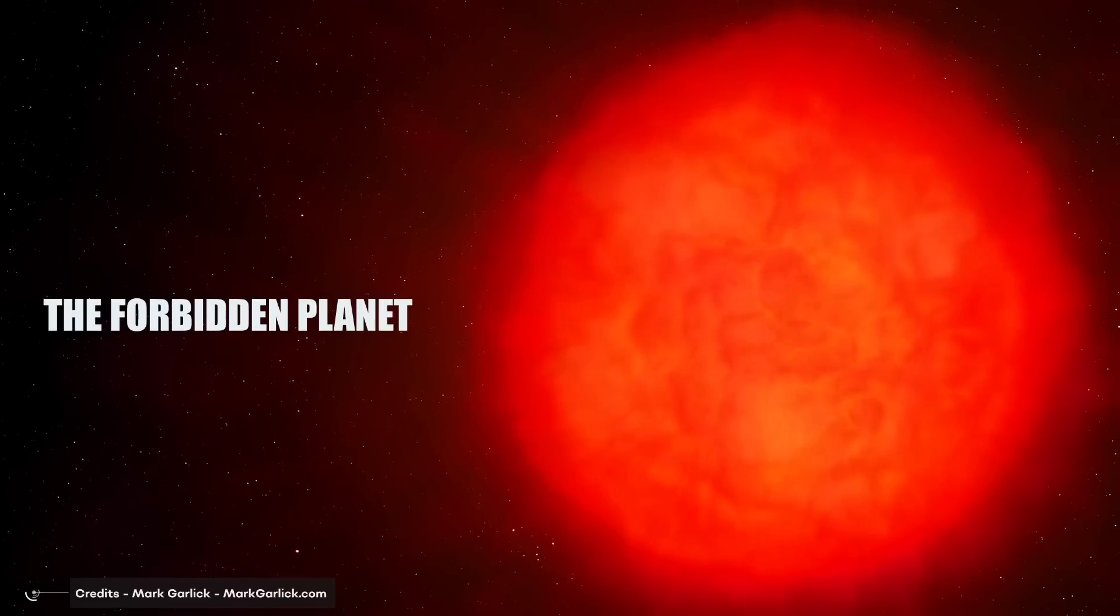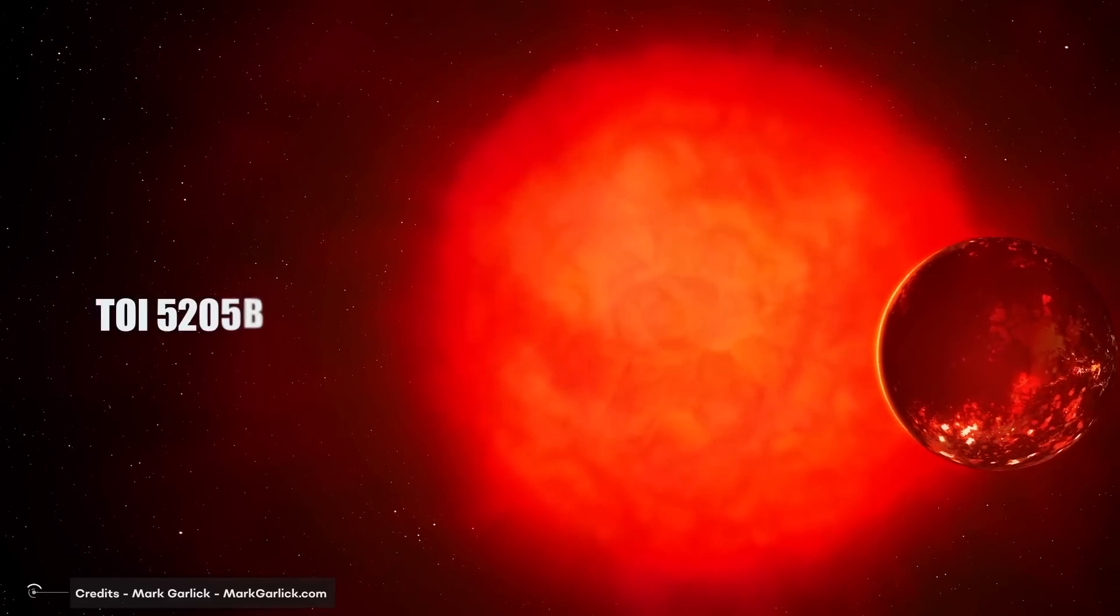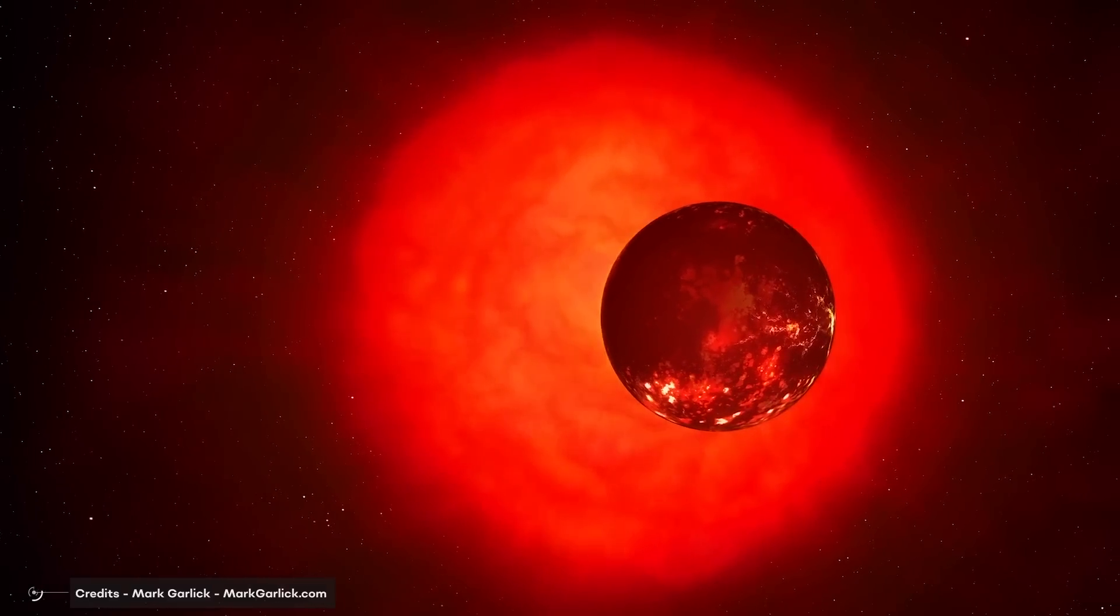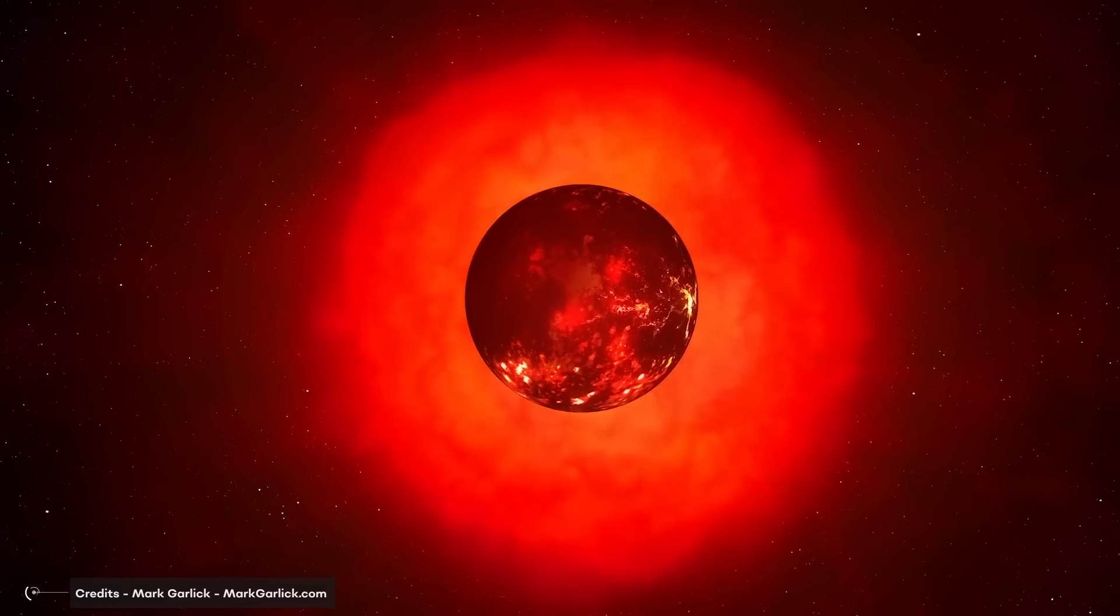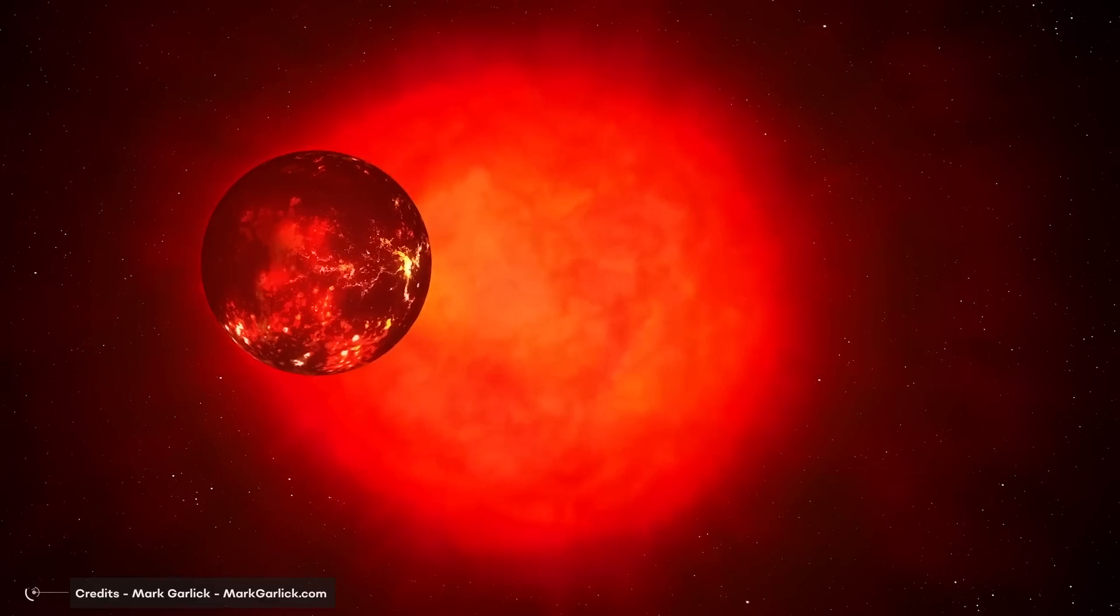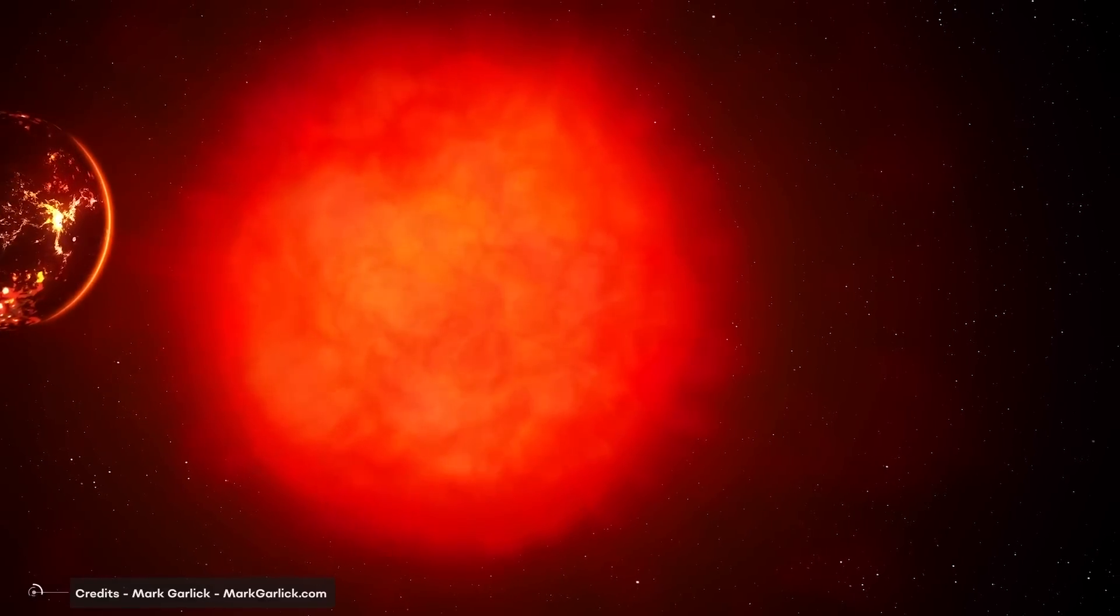Scientists have just discovered a new exoplanet, TOI-5205b, that is about the size of Jupiter, making it a forbidden planet because it orbits an M dwarf star. I know what you're wondering, what's the problem with that? Don't worry, I'll get there in a minute.